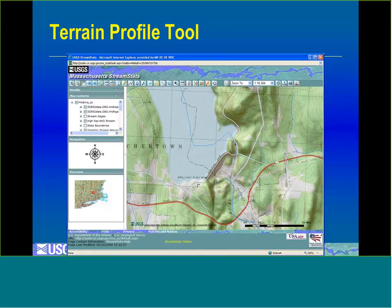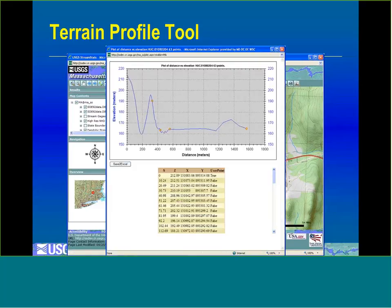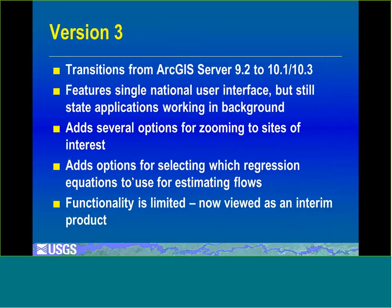Another tool is the terrain profile tool where you can pick any number of points on the landscape and get a profile. You click on the tool button, select several points, double-click at the end, and get a result showing a profile plot where yellow dots represent the sites selected. Again you get all the data, and you can save it to Excel.